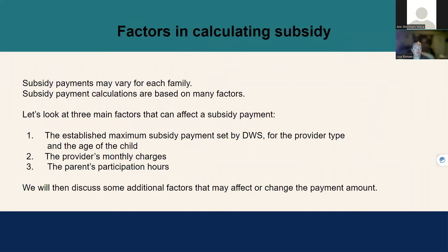As you're probably aware, subsidy payments may vary for each family. DWS subsidy payment calculations are based on many factors, but we're going to look first at three main factors: one, the established maximum subsidy rate set by DWS for the provider type and age of the child; two, the provider's monthly charges; and three, the parent or guardian's participation hours or need for child care. We will then discuss some additional factors that may affect the final payment amount.